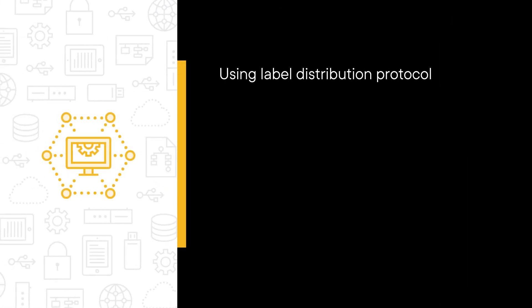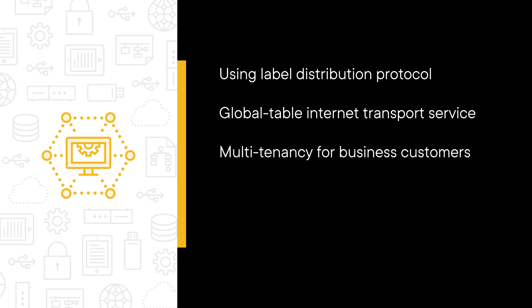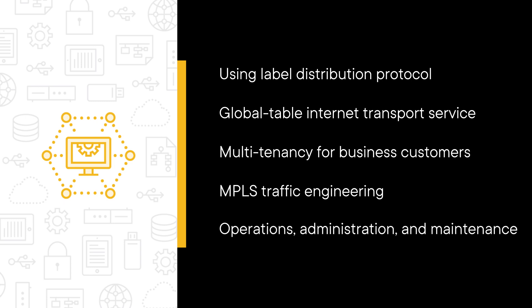The course covers the following five topic domains: using Label Distribution Protocol to build label switch paths, global table internet transport service across the MPLS core, multi-tenancy for business customers using layer 2 and layer 3 VPNs, MPLS traffic engineering path options and signaling, and operations, administration, and maintenance features to troubleshoot MPLS.